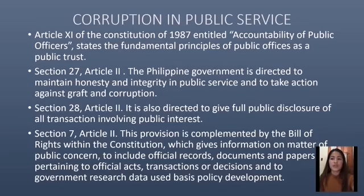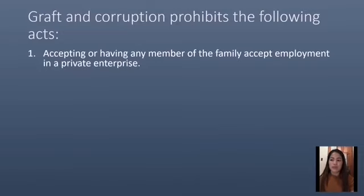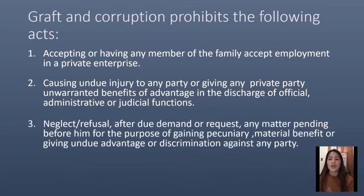Graft and corruption were further specified in Republic Act No. 3019, or the Anti-Graft and Corrupt Practices Act. The act prohibits the following: first, accepting or having any member of the family accept employment in a private enterprise; second, causing undue injury to any party or giving any private party unwarranted benefits or advantage in the discharge of official, administrative, or judicial functions; third, neglect or refusal, after due demand or request, to act on any matter pending for the purpose of gaining pecuniary or material benefit or giving undue advantage.